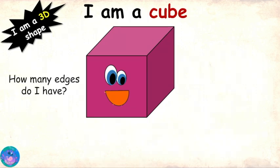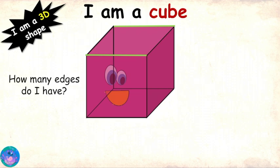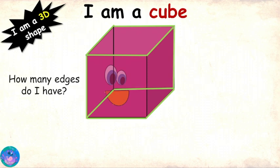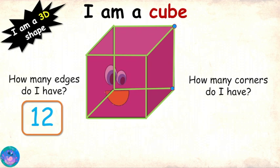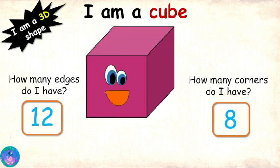Now can you tell me how many edges I have? Let me count: 1, 2, 3, 4, 5, 6, 7, 8, 9, 10, 11, 12. You have 12 edges. Correct. And how many corners do I have? 1, 2, 3, 4, 5, 6, 7, 8. Eight corners. Very good.